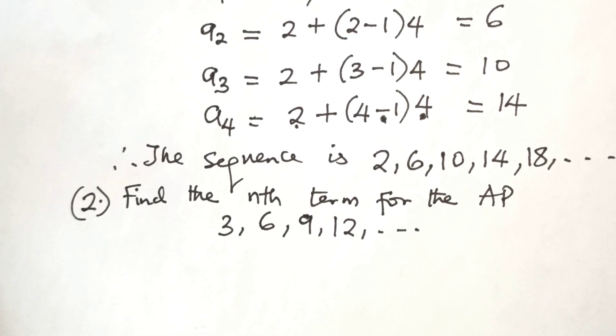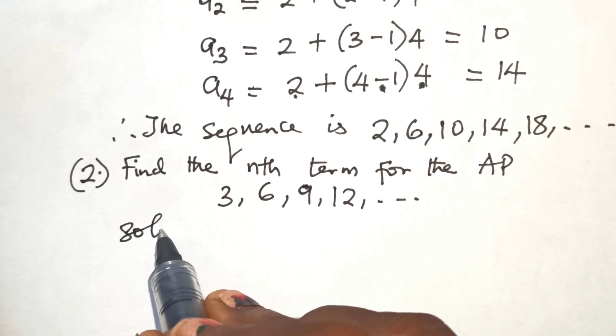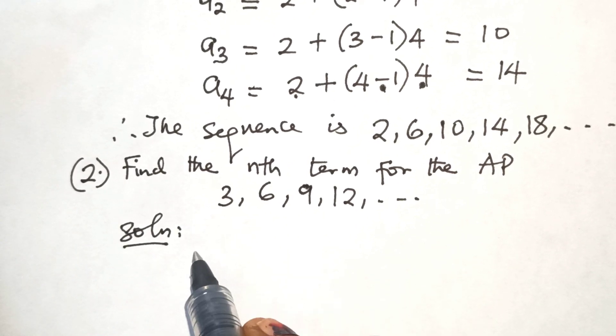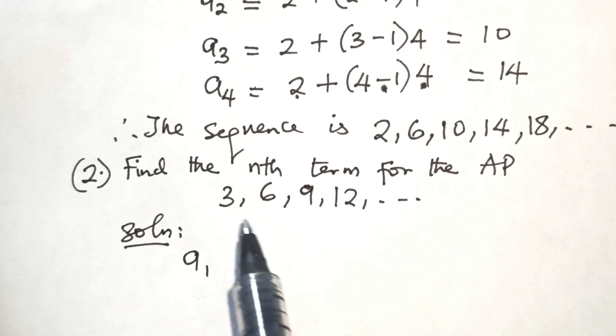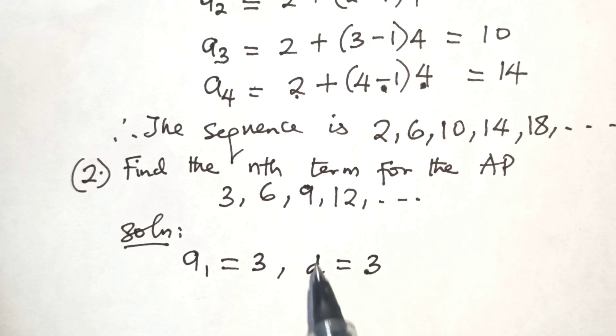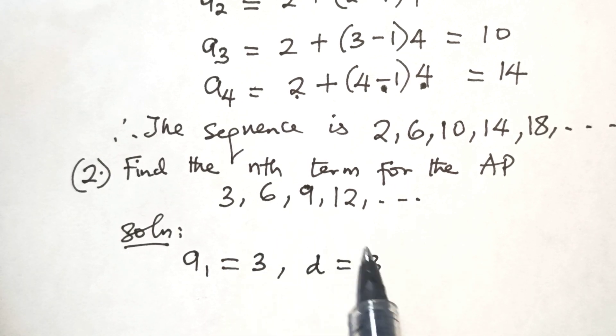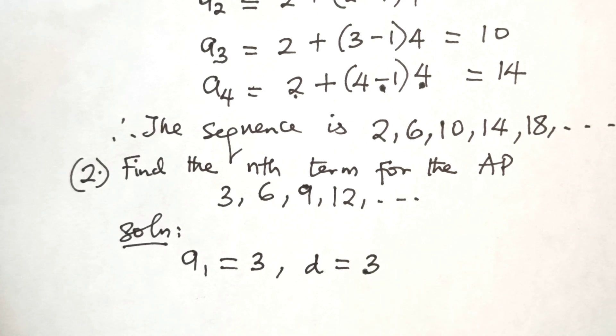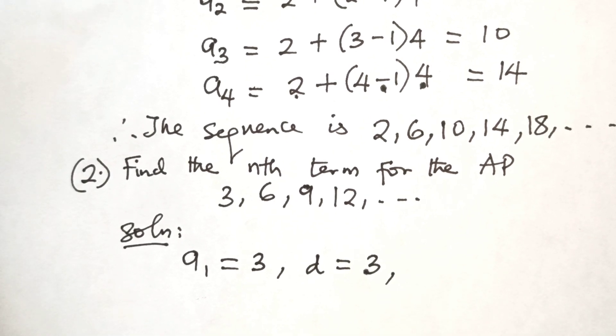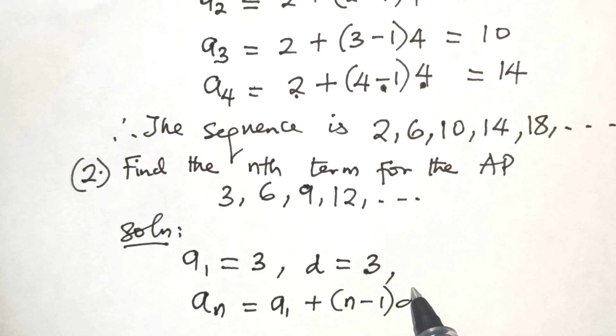Solution: The first term in this sequence is 3, so A1 is equal to 3. The common difference is 3. If you subtract 3 from 6 you have 3, if you subtract 6 from 9 you have 3. So common difference is equal to 3. Then the nth term AN is equal to A1 plus N minus 1 times D.